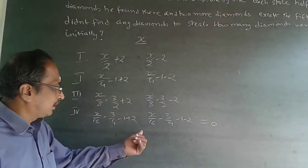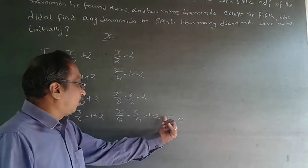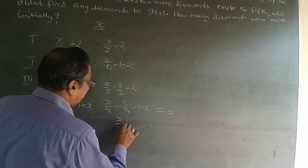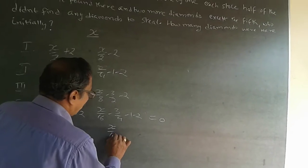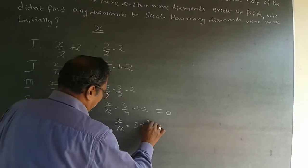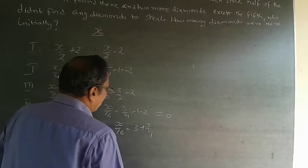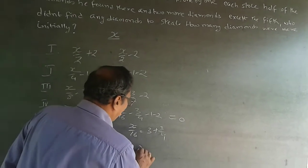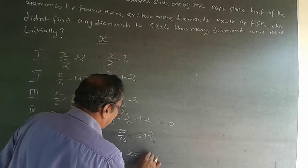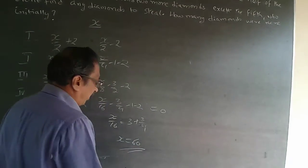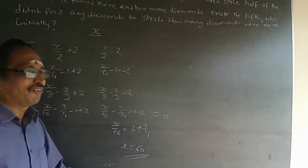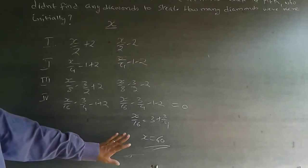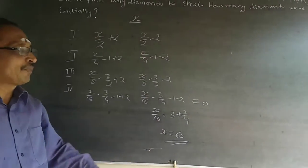Setting the remainder equal to zero, move the constants to the other side: X/16 equals three plus 3/4, which gives 48 plus 12 over 16. Solving, X equals 60. This is the algebraic way of doing it — understand the equation and this approach.